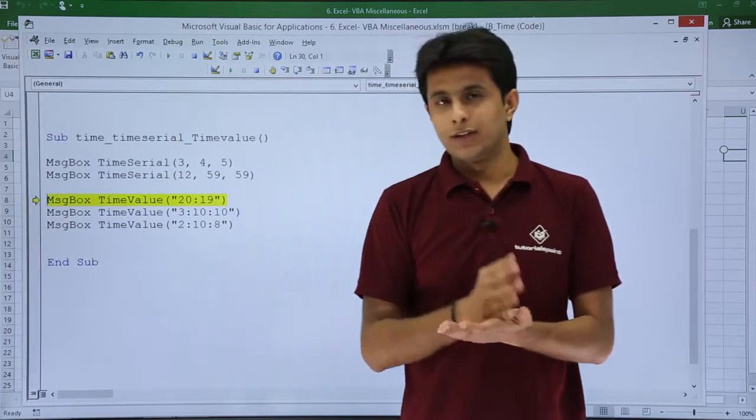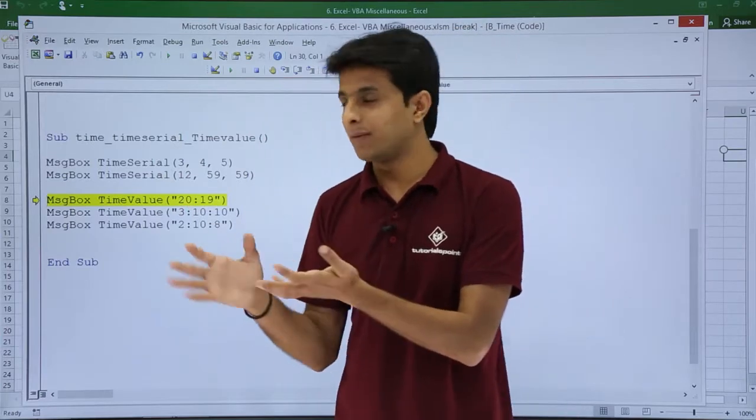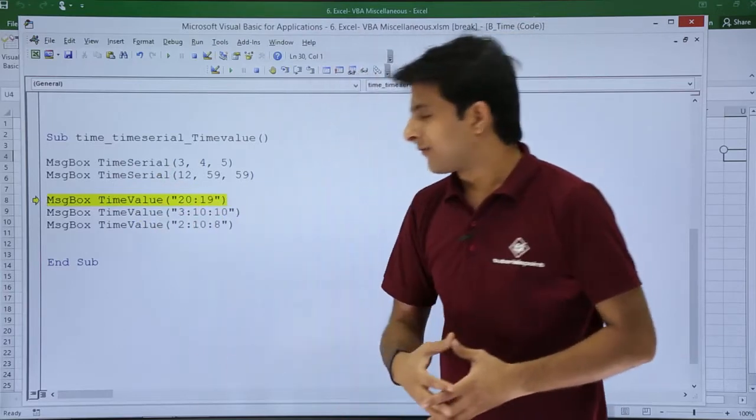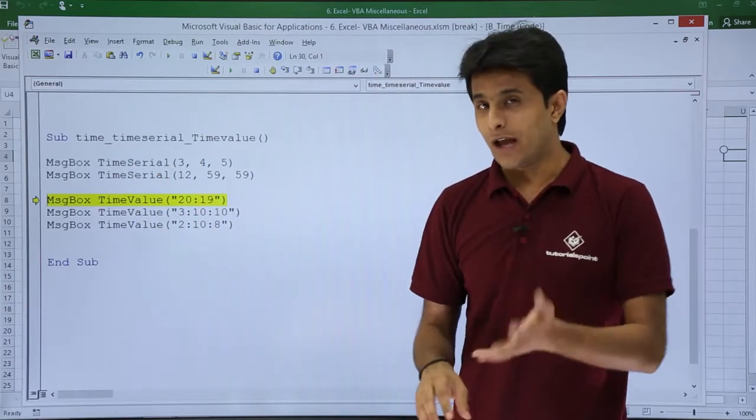So these are converted into number of hours, minutes, and seconds, and I have attached a PM or AM automatically with the help of TimeSerial. Let us see the TimeValue. If I have written as 20:19, what happens? I'll click on Step Into.